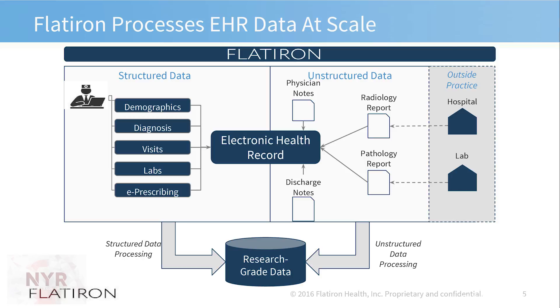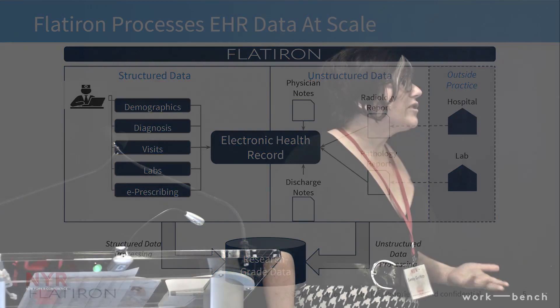One of the things we try to do at Flatiron is actually process that EHR data at scale and make that data on 95% of real-world patients usable and actionable. We do that in a few different ways. We take structured data that is still messy and not research quality and we harmonize it. We also take unstructured data that lives deep in notes and pathology reports, and combine it together to make research-grade data that we can then use to answer questions.